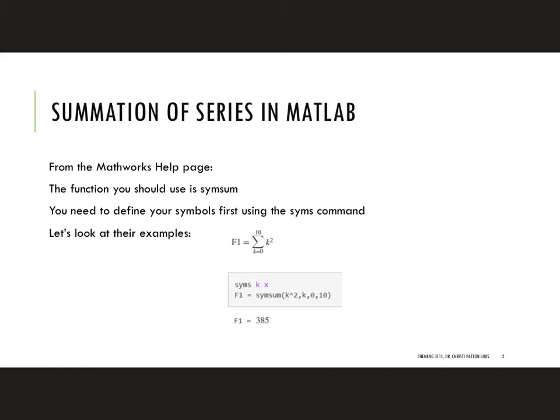Open parenthesis, and in this case our function is K squared, so K carat 2. Our counter is K, so comma K, and then we're going to start at 0 and end at 10, so comma 0 comma 10. And if you do that and hit return then it will give you the answer in this case 385.